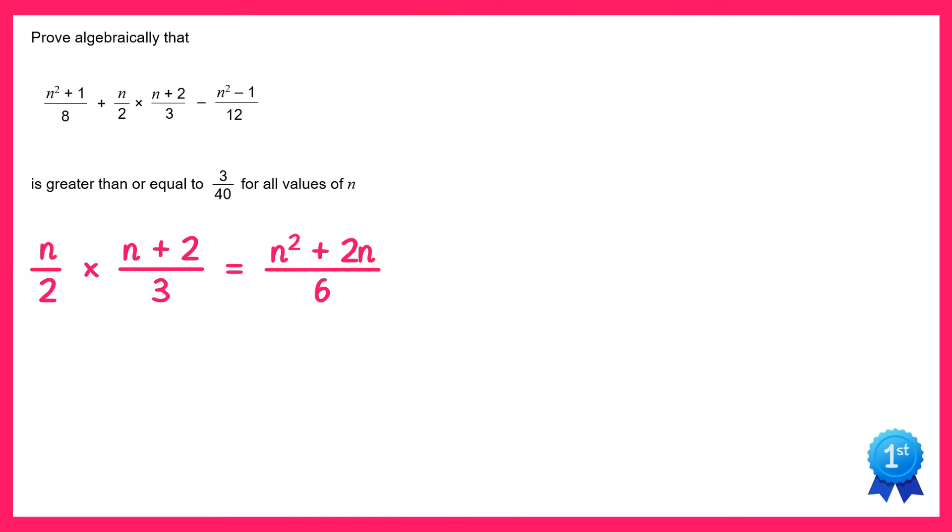Now that we've got this as one fraction, we can rewrite the question. So it was n squared plus 1 over 8, then we have this new fraction n squared plus 2n over 6, and then we subtract from that n squared minus 1 over 12.